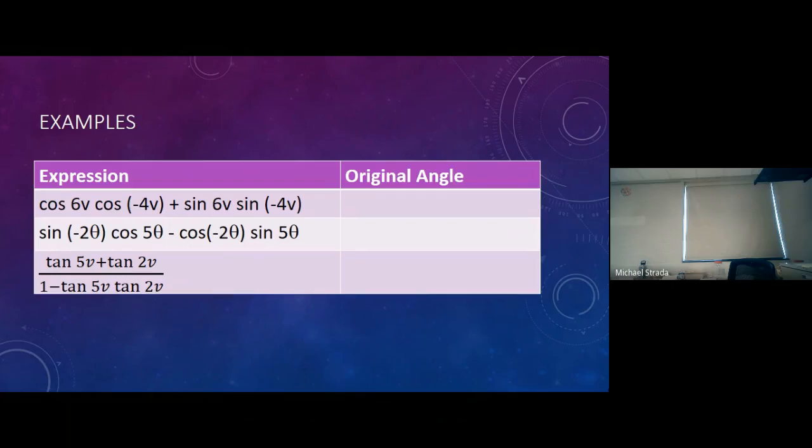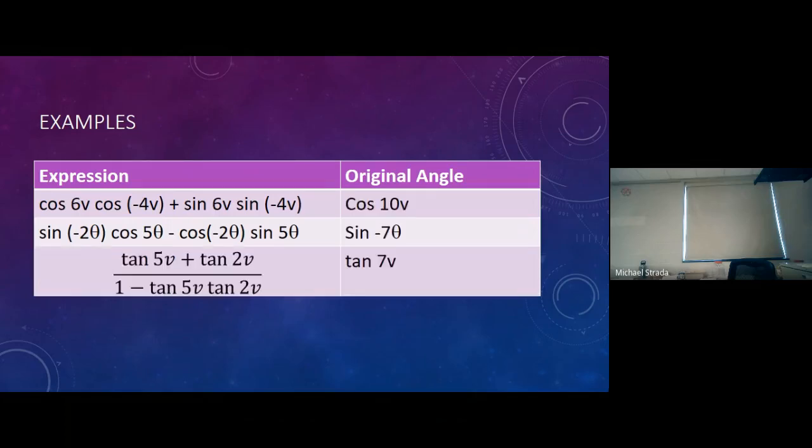The last one has tangents so the original problem needed to be tangent. The sign between the two angles is always the same as the numerator. Since the numerator says plus I'm going to add them, 5 plus 2 gives me 7, so that would indicate my three answers would be cosine of 10v, sine of negative 7 theta, tangent 7v.